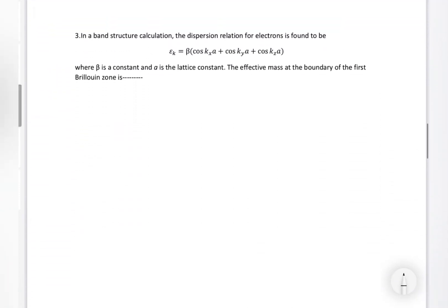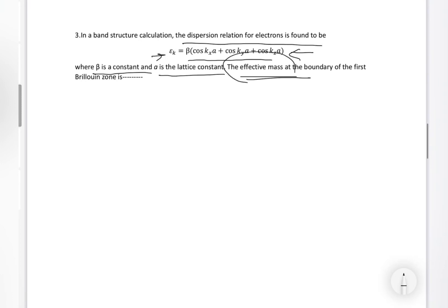This is very interesting. This pattern of problem comes in several NET and GATE exams. In a band structure calculation, the dispersion relation for electrons is found to be E_k = β[cos(k_x a) + cos(k_y a) + cos(k_z a)], where β is constant and a is the lattice constant. The effective mass of electron at the boundary of the first Brillouin zone is what? This is the dispersion relation for electrons.